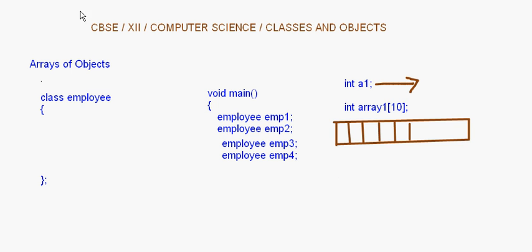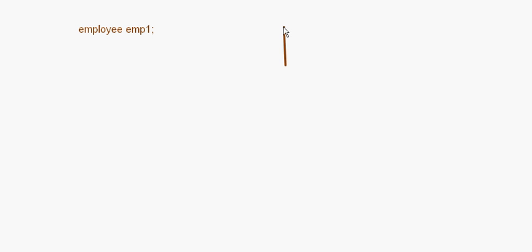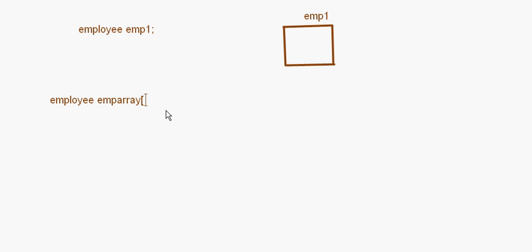The same way, for objects we are going to do this now. When I write employee mp1, this is just one object, so in memory we have just one object mp1 wherein we store details of one employee only. Now if I want to create an array, I will write: employee mp_array[5]. Here employee is the class name, so we are making an array of the class type employee with size five.